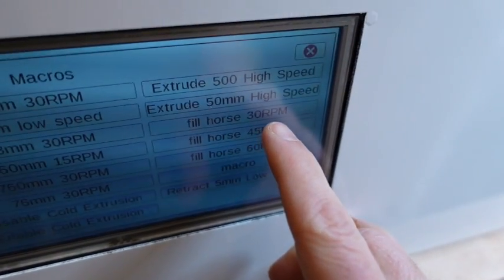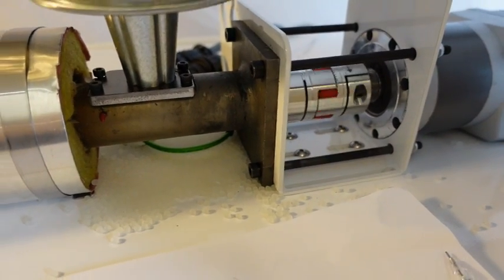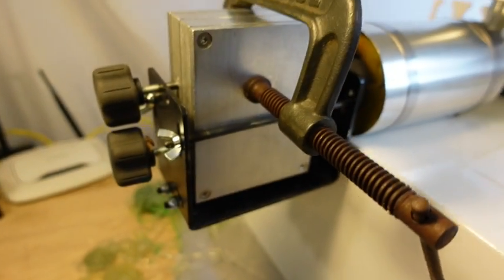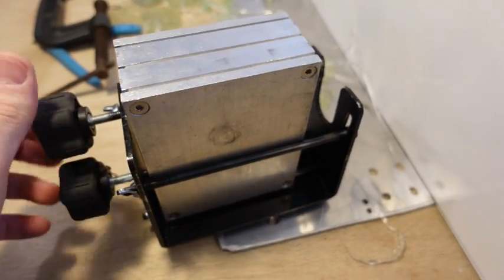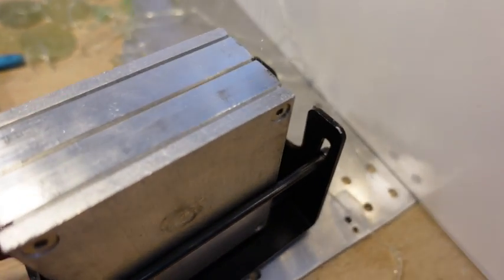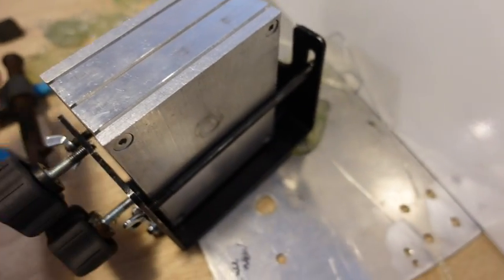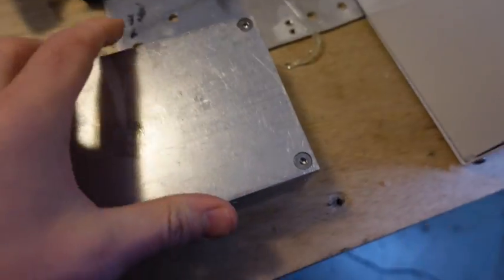Now we're going to injection mold. We're going to do the 45 RPM setting here. Alright, let's see how it turned out. This is fresh out of the mold here. I haven't let it cool. But usually you want to let it cool for a little bit.